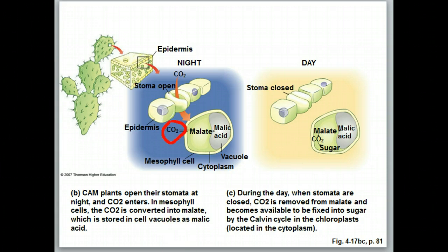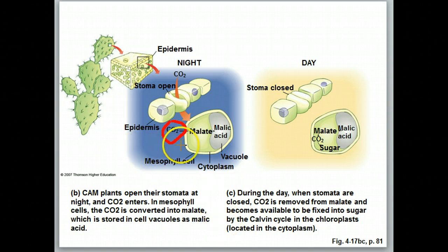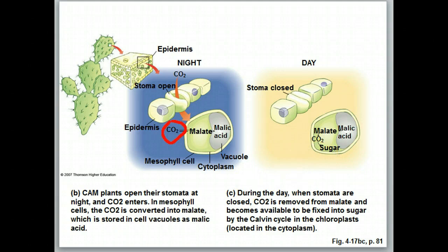If we measure the pH in one of these CAM plants, we'd find that through the course of the night, the cells of that plant become more and more acidic. During the course of the day, they would become less acidic.